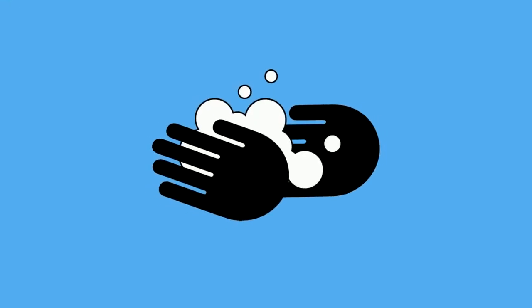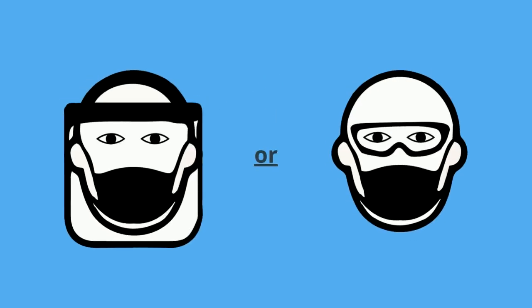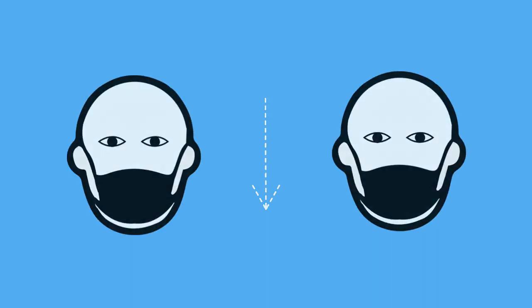Next, perform hand hygiene carefully before touching your face. Then remove the eye protection by leaning forward and pulling away from your face, whether that is the face shield or goggles.